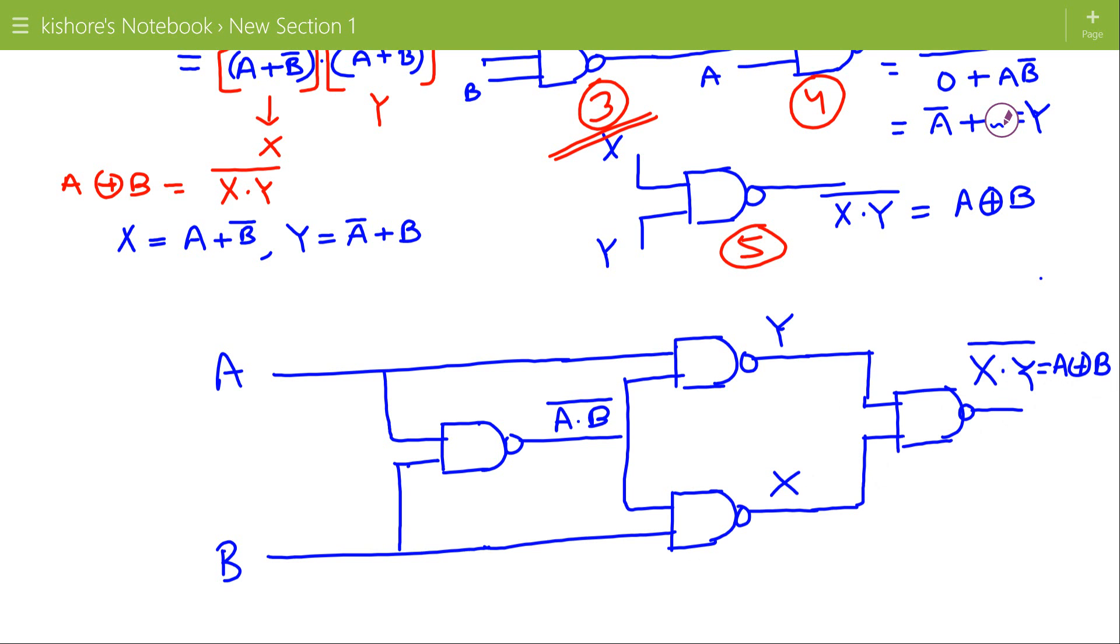So total 4 number of NAND gates are required to realize exclusive OR gate using NAND gate. And if we have to make exclusive NOR gate using NAND gate then one more NAND gate is required that will be used as inverter. And this output will give complement of A XOR B that is A XNOR B.